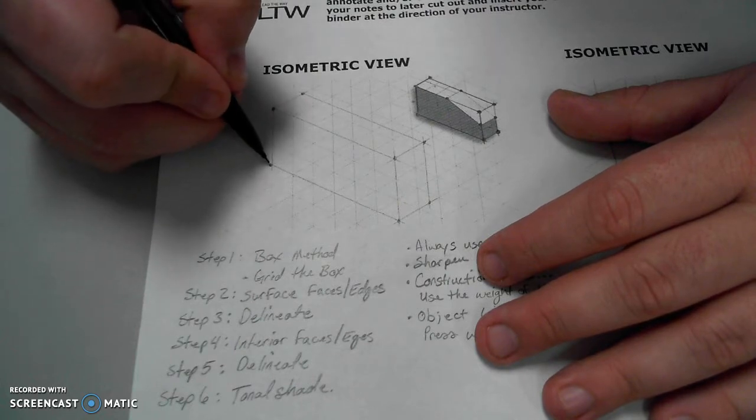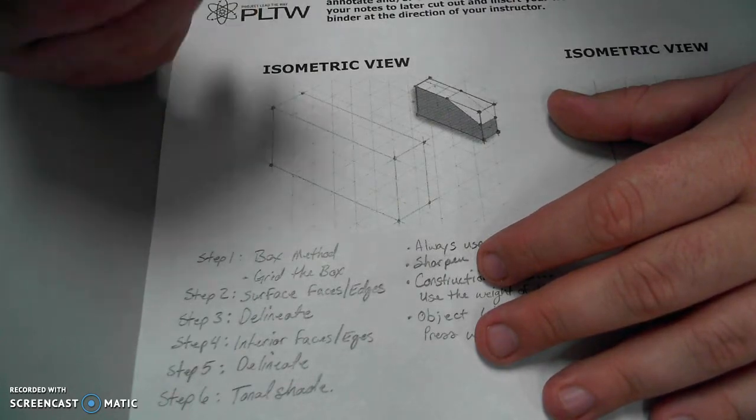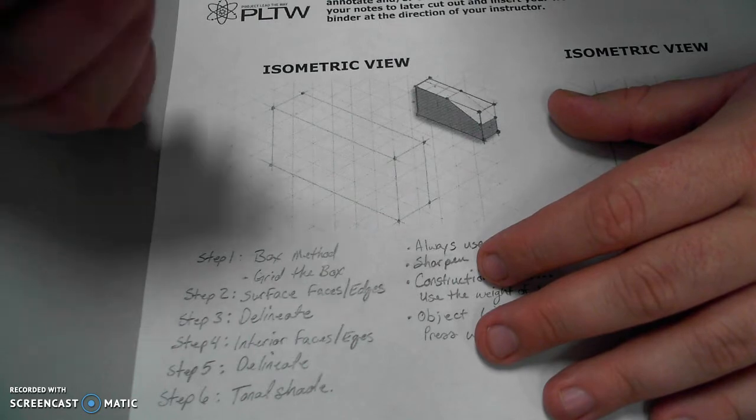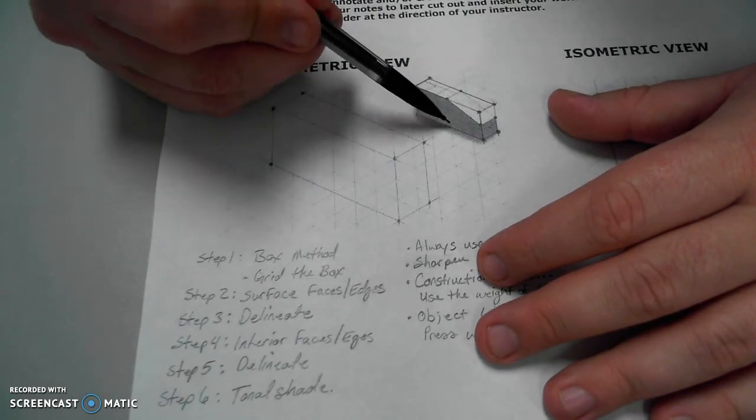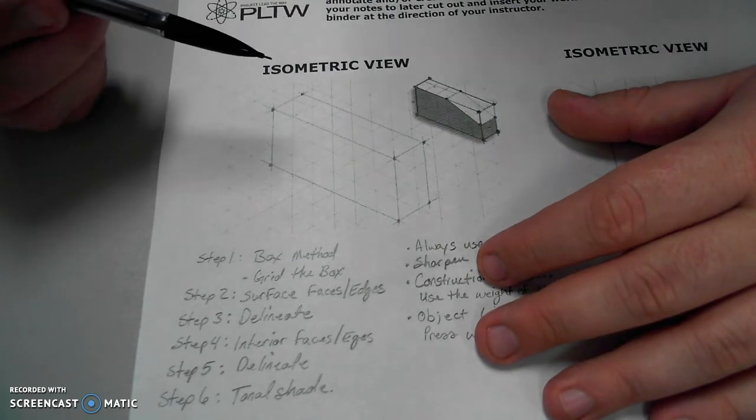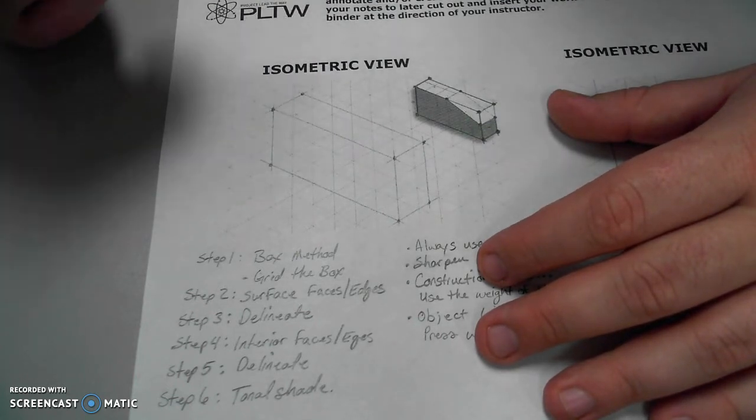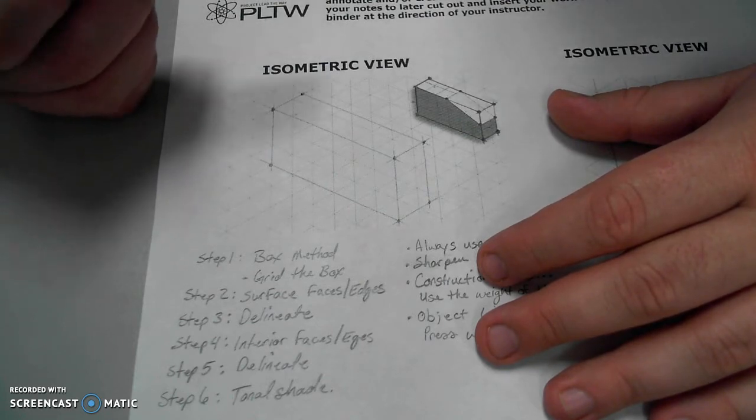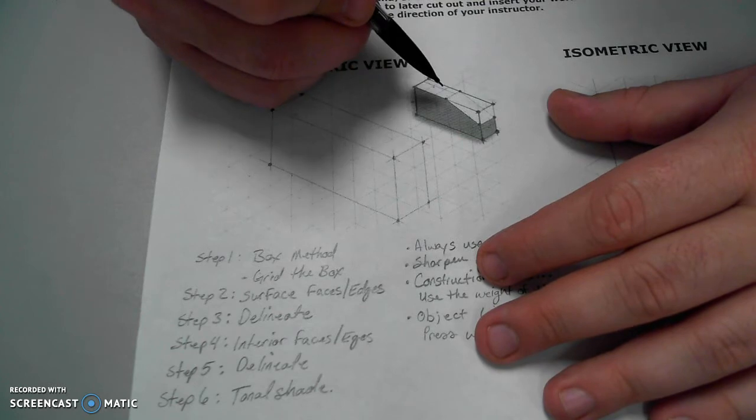To be able to grid it off, I need to find where are my points of interest here. Now, there are one, two, three, four, five, six units. So I could grid that, and that can be useful for more complex objects. This object isn't very complex.